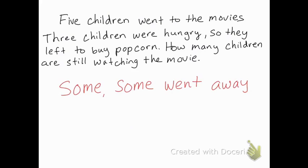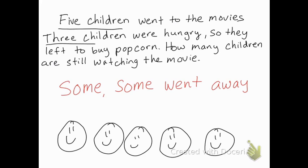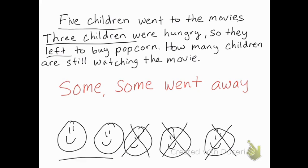'Five children went to the movies. Three children were hungry, so they left to buy popcorn. How many children are still watching the movie?' We started with five children, and three left to buy popcorn. Here we have five smiling children's faces, and we X out the three that left — leaving just two children. This is subtraction: five children minus three children equals two children.